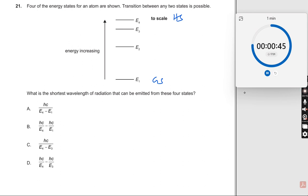What is the shortest wavelength of radiation that can be emitted from these four states? There will be one shortest radiation. Which one is it?